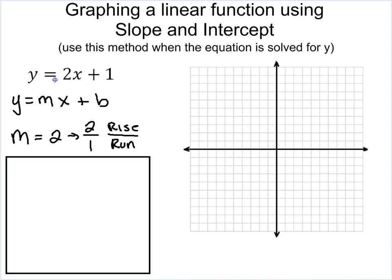So in this case, m equals 2. Now, slope always has to be rise over run. So in this case, I'm going to change the 2 to 2 over 1, because if it's a whole number, you can always put it over 1.